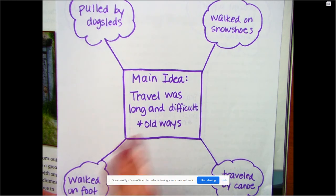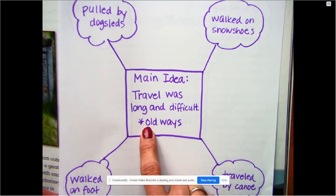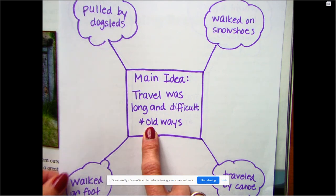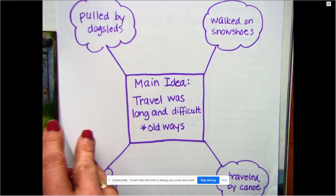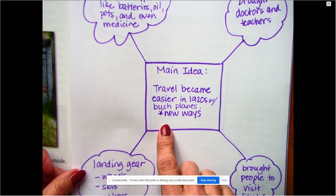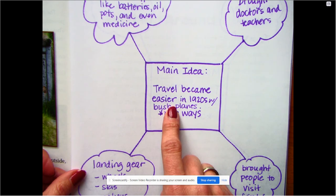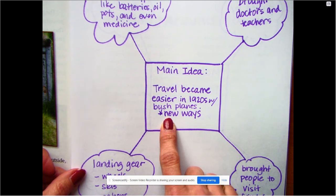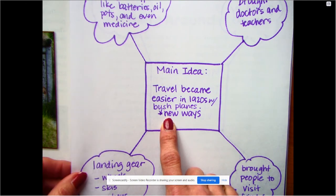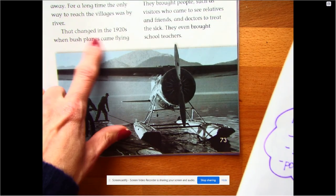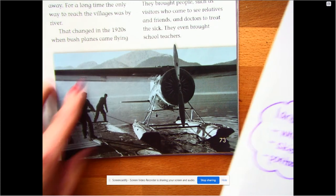I could also, on the flip side, say: what's the main idea using the new ways? How could I compare and contrast the old ways from the new ways? It's on the back. If I were to reread the story, it talks about how travel was easier in the 1920s with those bush planes. That's something that happened with the new ways. It showed us a picture of what that bush plane looks like, and it tells us right here it was difficult, but it changed in the 1920s when the bush planes came flying in.